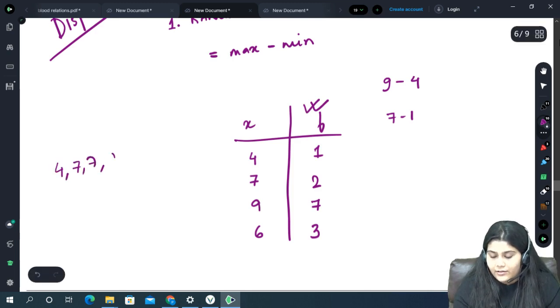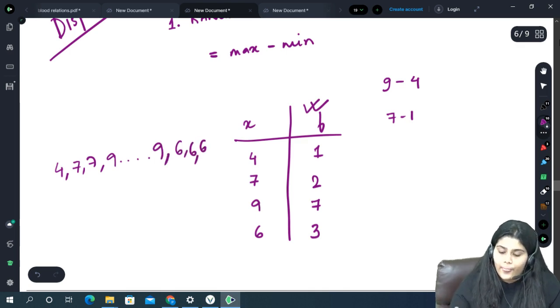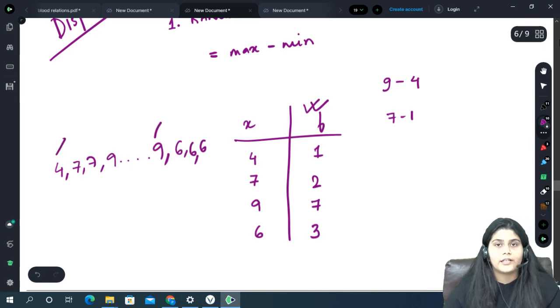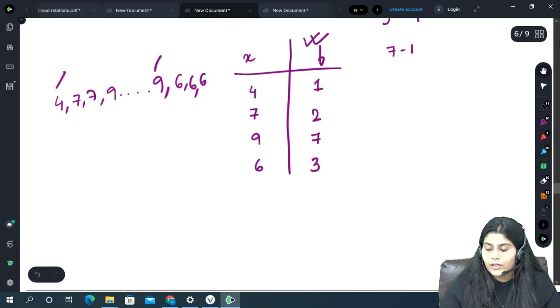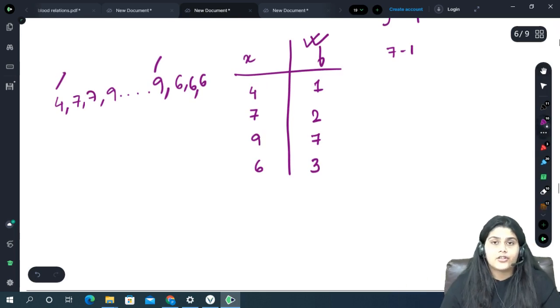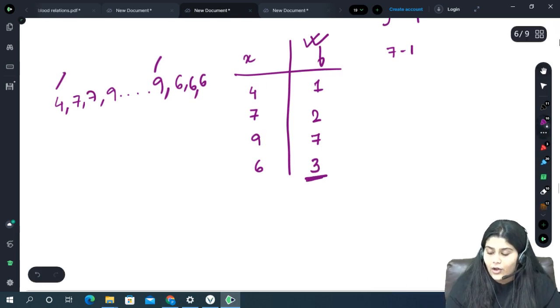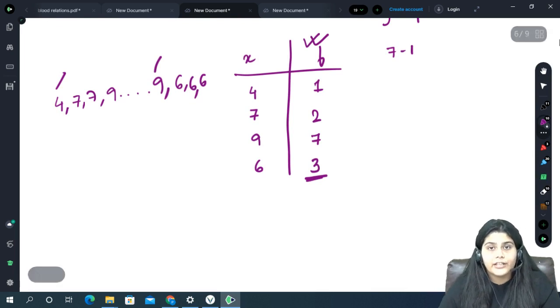9-4? Not 7-1. We always deal with x-values. Frequency is only to aid us but actually we care about x-values. Frequency का range नहीं चाहिए, we need the range of the actual data. Right? Because if we open this it will be 4, 7 seven times, 9, 6, 6, 6 - that's how our data will look. So our range will actually be 9-4. So again be sure that if you ever calculate range in an exam or anywhere, don't make the mistake of taking the maximum and minimum frequency.